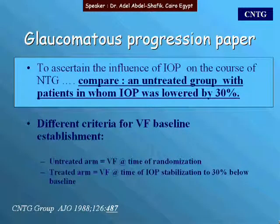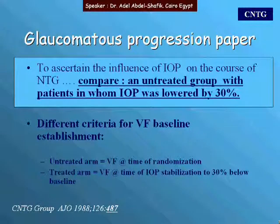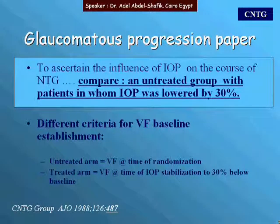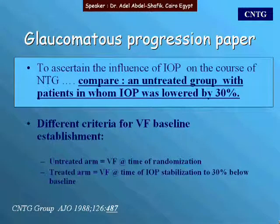Two papers were published in the same journal in 1998. The first aimed to confirm the influence of IOP on the course of normal tension glaucoma. It compared the untreated group with those in whom a 30 percent IOP reduction was achieved. An important distinction was that the baseline visual field for the untreated arm was established at the time of randomization, while for the treated arm, new visual fields were taken only once the 30 percent reduction was achieved.